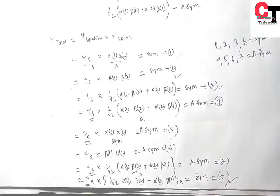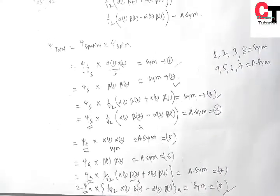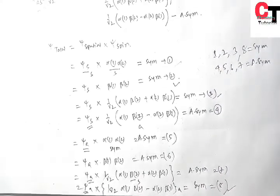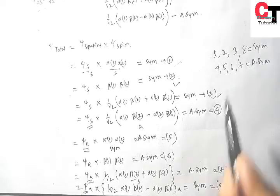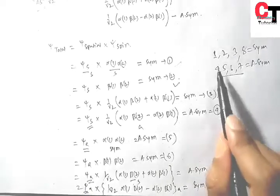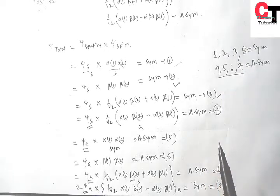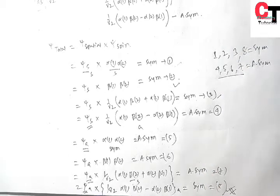Therefore, according to the Antisymmetry Principle, the total wave function must be antisymmetric. Therefore, the allowed wave functions are cases 4, 5, 6, and 7.